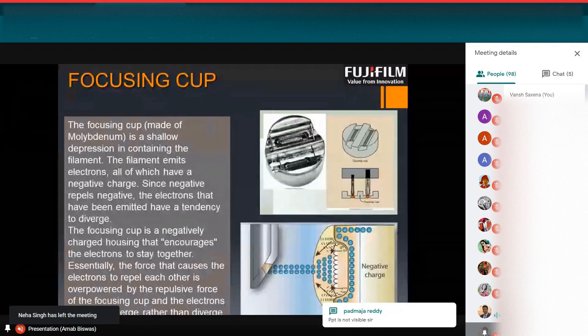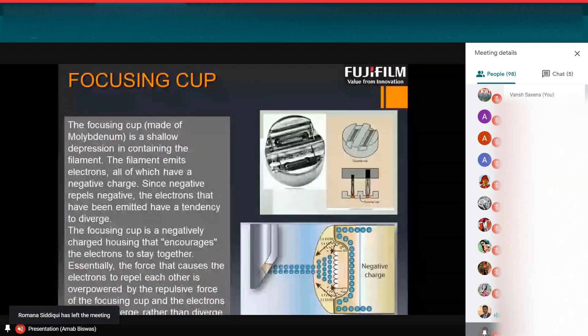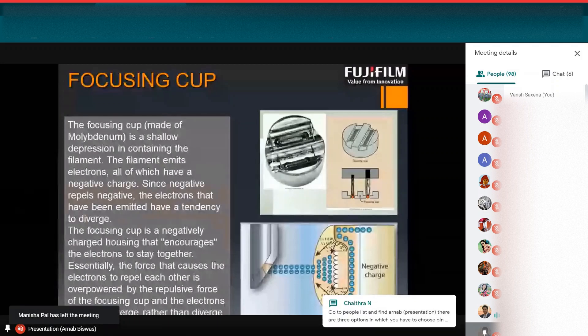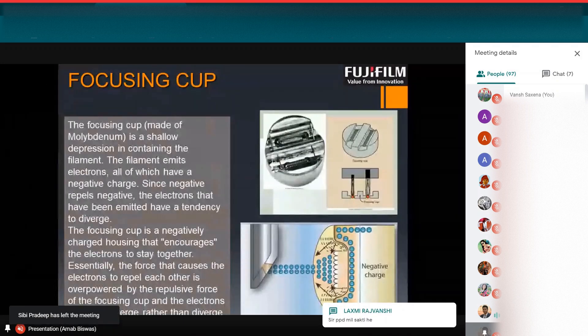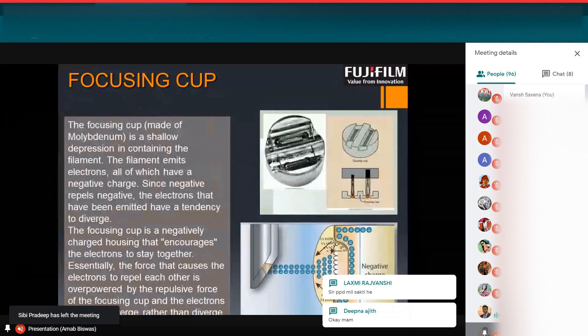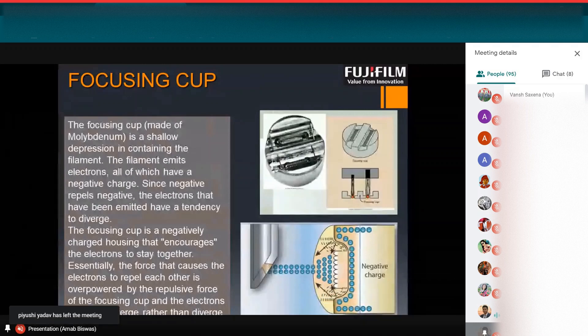So it has a negatively charged housing, which encourages the electrons to stay together. Essentially the force that causes the electrons to repel each other is overpowered by repulsive force of the focusing cup. And the electrons tend to converge rather than diverge. So we can maintain the flow in one direction. If we don't use the focusing cup, then the flow will be diverged in many directions.